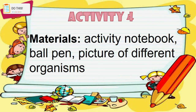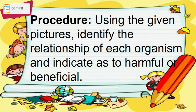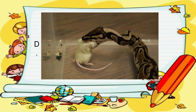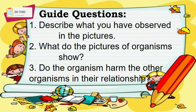Do you now understand the relationships among living organisms? Now let's proceed to Activity 4. Materials needed: Activity Notebook, Ball Pen, and pictures of different organisms. Procedure: Using the given pictures — A through E — identify the relationship of each pair of organisms and indicate whether it is harmful or beneficial. Answer the guide questions: 1. Describe what you observed in the pictures. 2. What do the pictures of organisms show? 3. Do the organisms harm other organisms in their relationship?